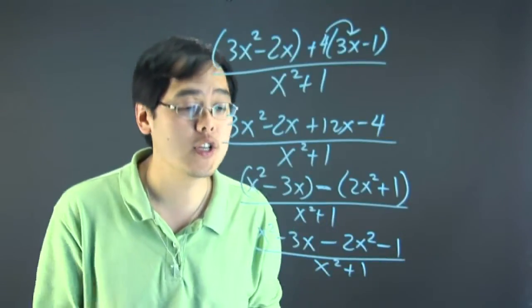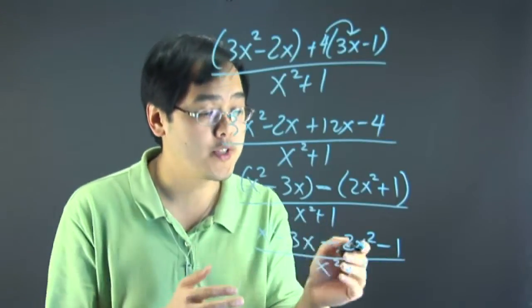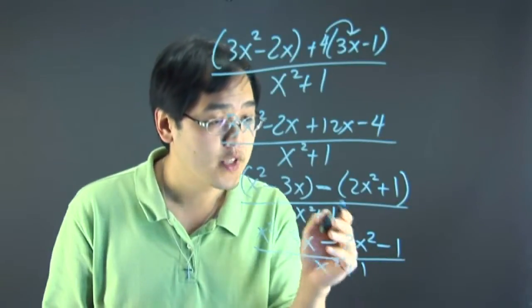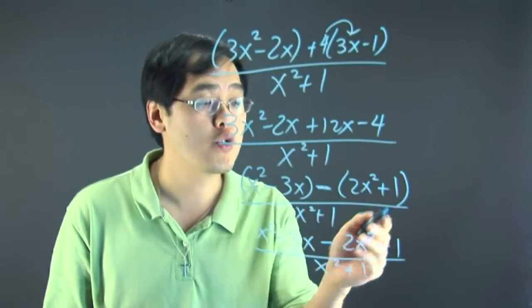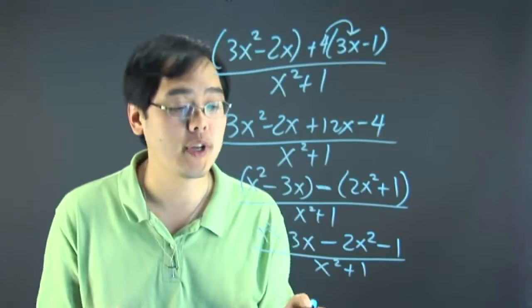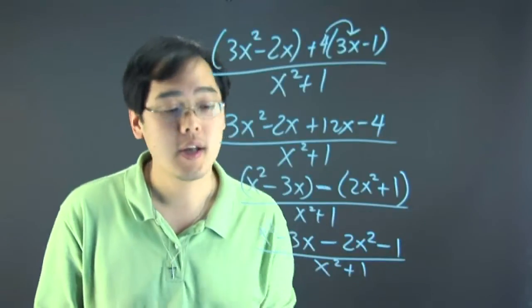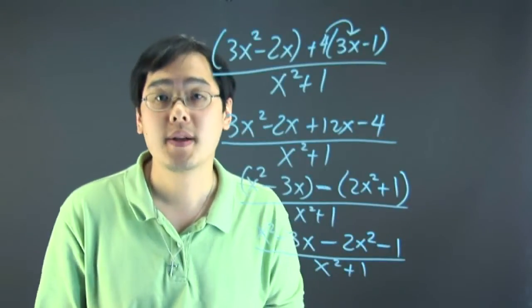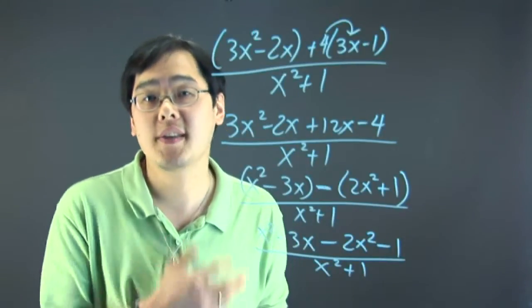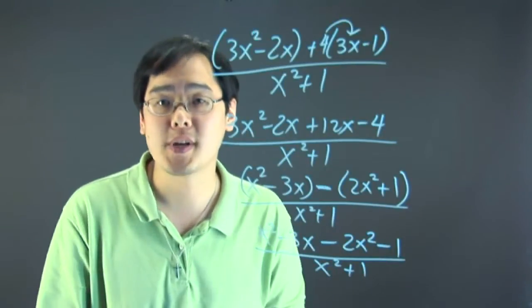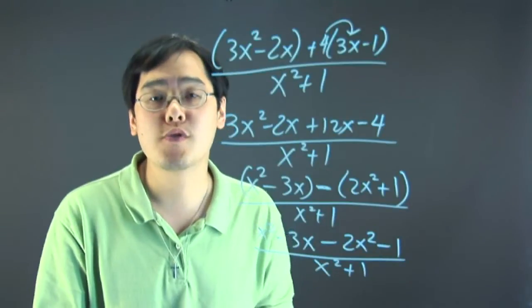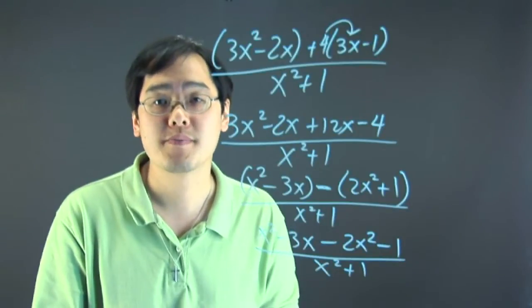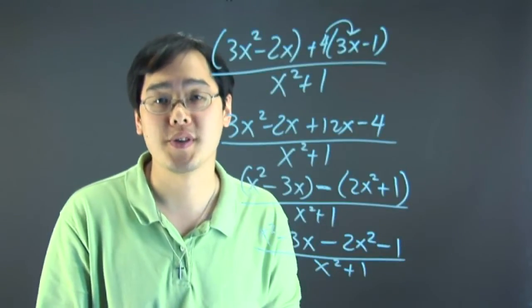So when it comes to division, before you can simplify, you want to remove the grouping symbols appropriately, and then you can combine like terms from there. I'm Jimmy Chang, and there are a couple of examples on how to remove grouping symbols in algebra with division.